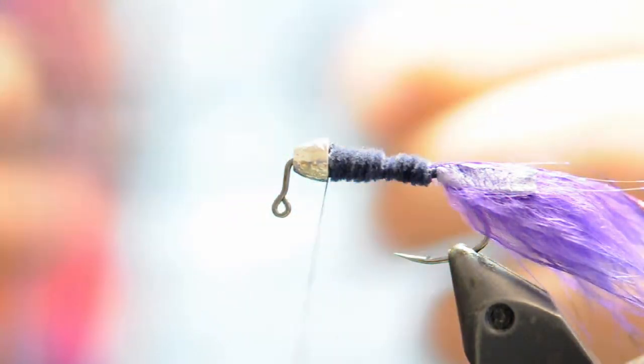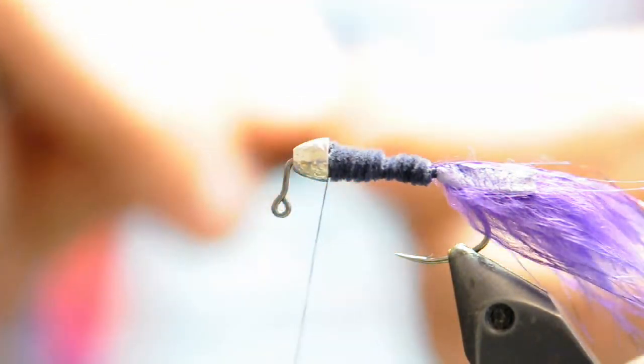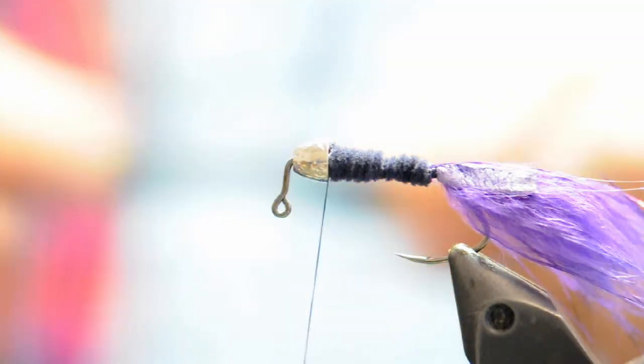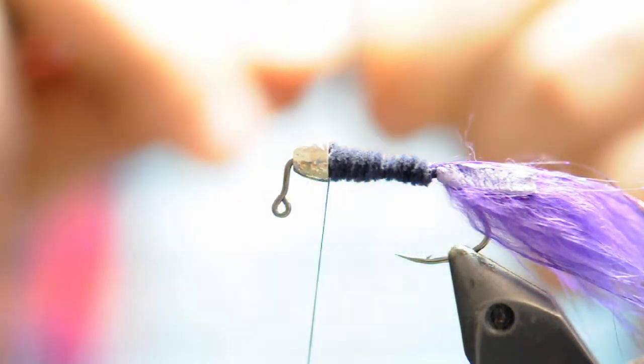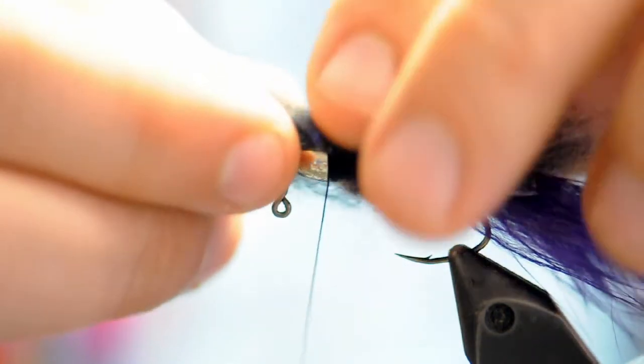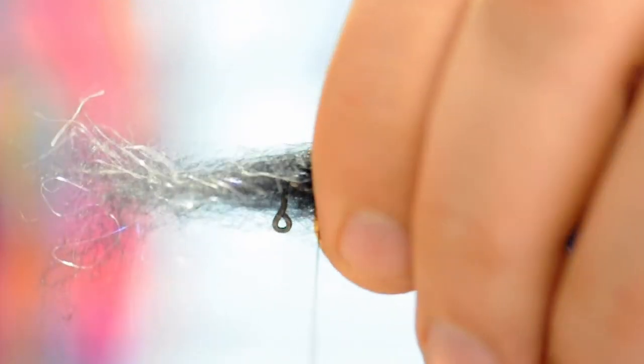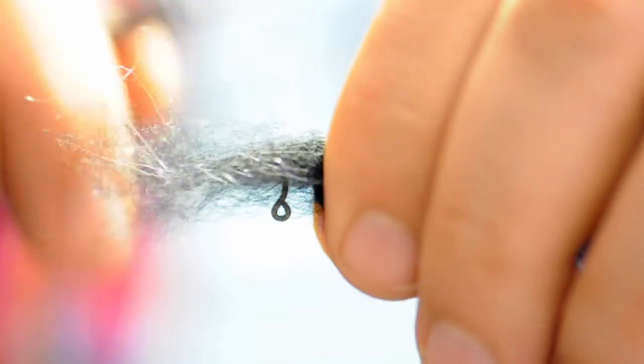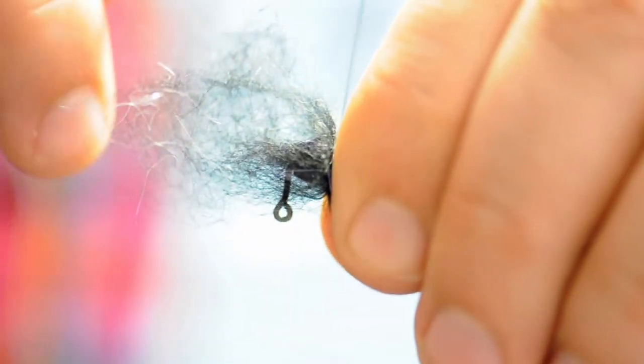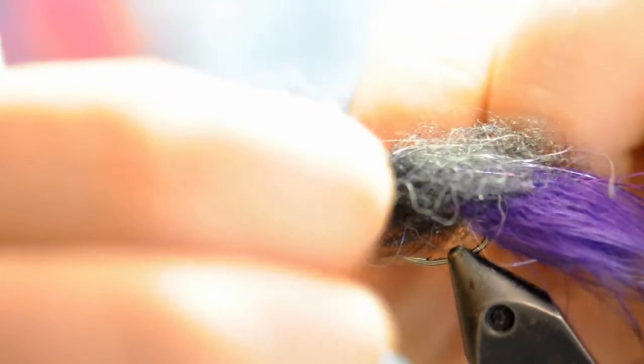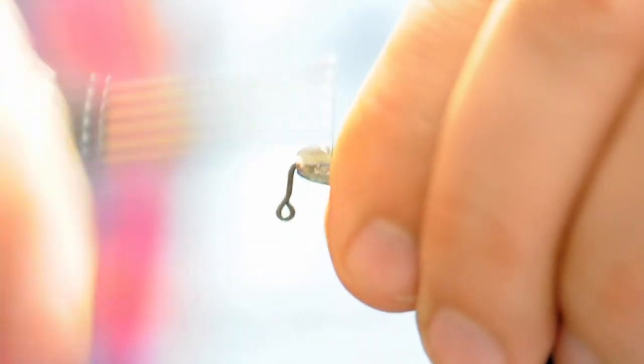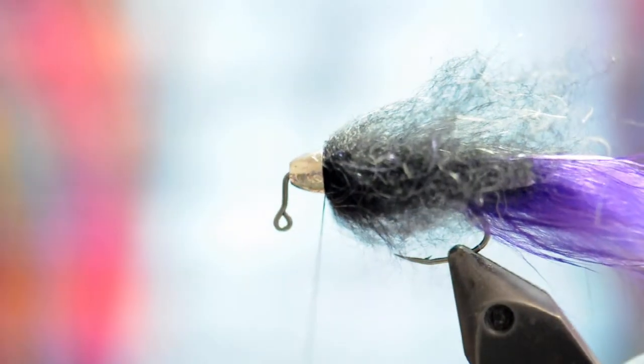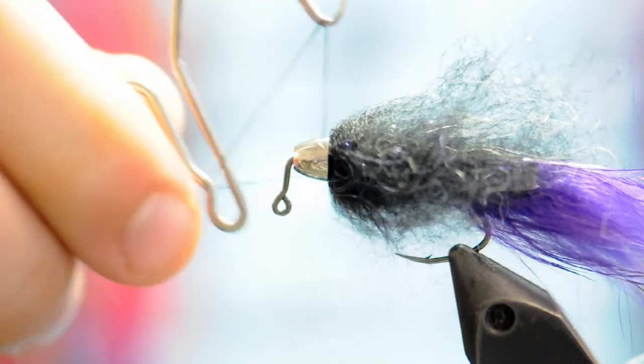So now I'll preen some laser dub, just aligning the fibers so that I have as few losses of fiber as possible. So now I'll roll the whole bunch over the head of the fly, take a thread wrap or two, three in this case, and pull that into that gap. And now I'll add a couple more wraps to the front to lock it in completely and then whip finish.